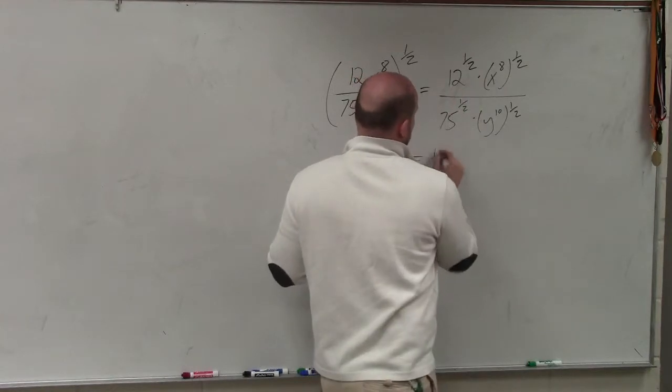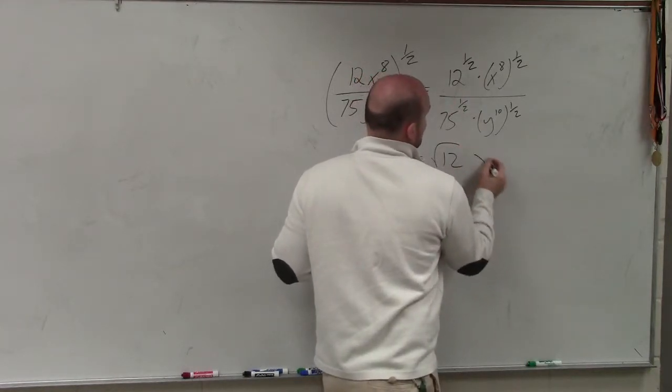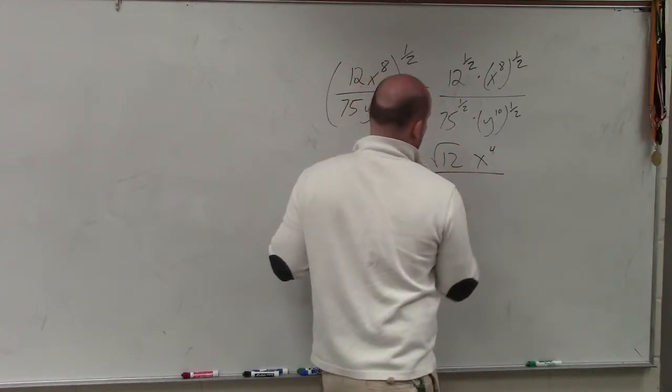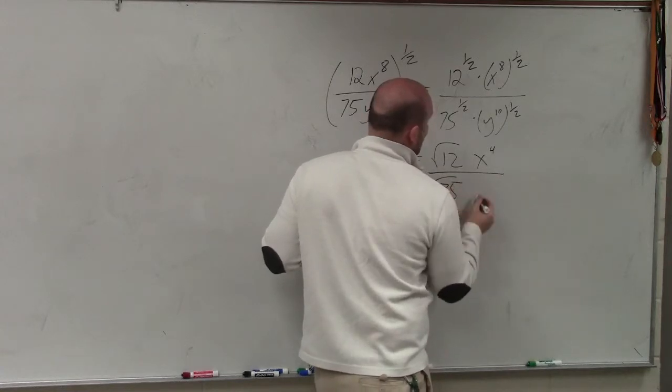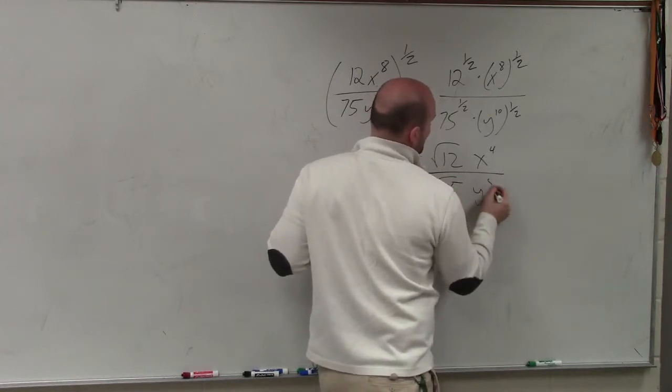So here I have the square root of 12 times x to the 4th divided by the square root of 75 times y to the 5th.